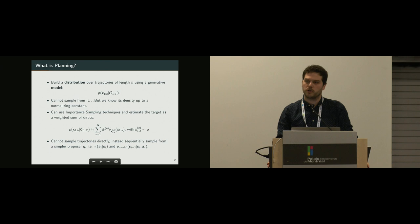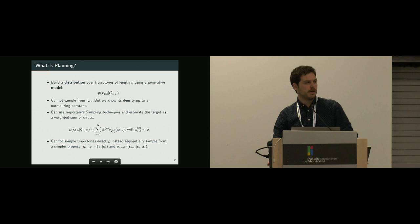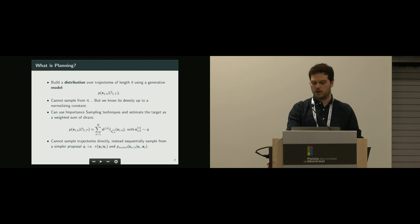However, I don't know how to sample full trajectories, right? So I can do something a bit simpler. I'm going to use sequential importance sampling and draw from a sampler proposal and build this complex sequential distribution iteratively. Here our proposal is going to be basically like a model-free policy and a transition model.